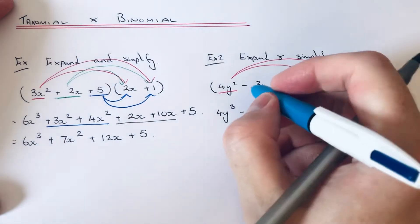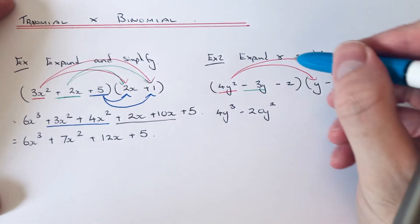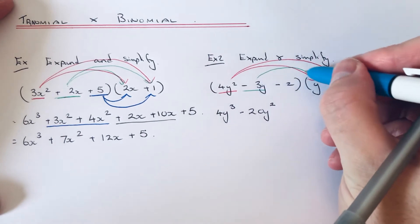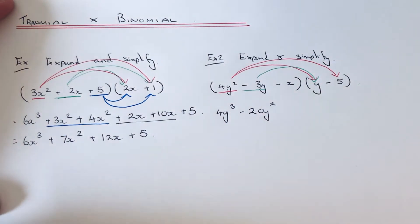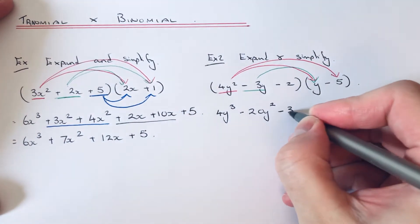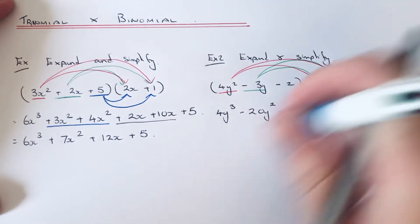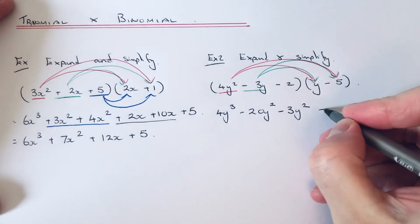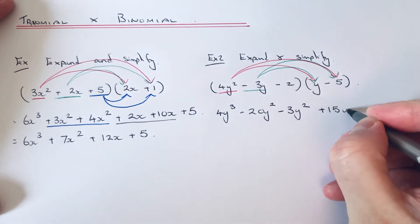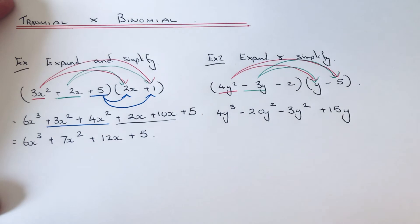Then multiply the minus 3y by the minus 5, which is plus 15y. And then move to your final term of the trinomial, which is minus 2.